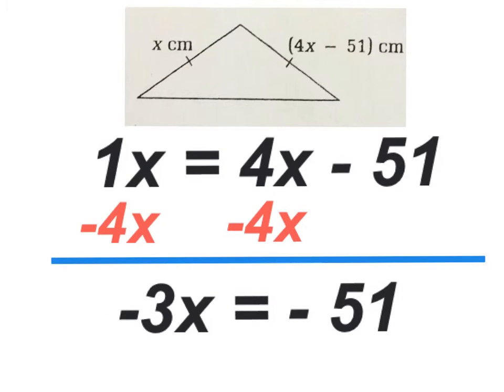The second step that I need to do here is because I have a variable term on my right hand side, I have to get rid of it. It's 4x. The opposite of 4x is negative 4x or minus 4x. So I subtract 4x from both sides of the equation.